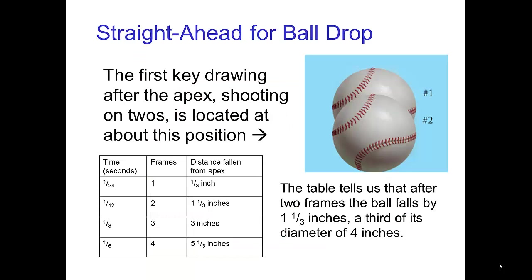Shooting on twos, the key drawing after the apex is located at about this position. Remember after two frames, the ball falls a distance roughly equal to the width of two fingers.